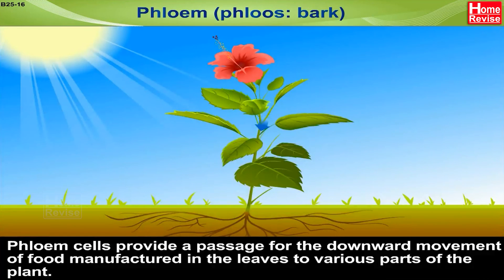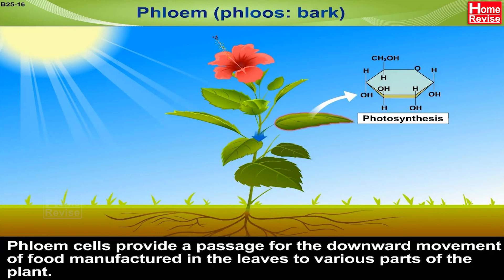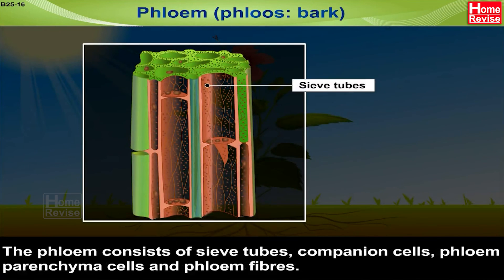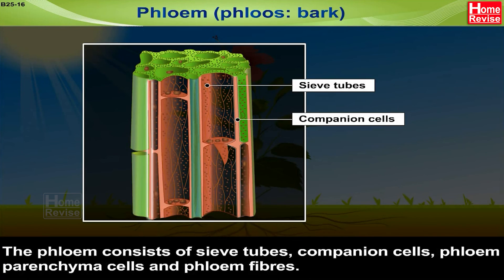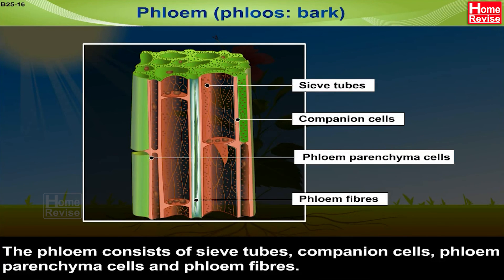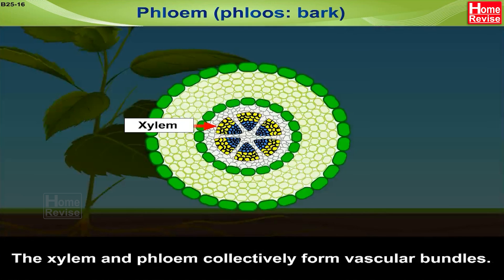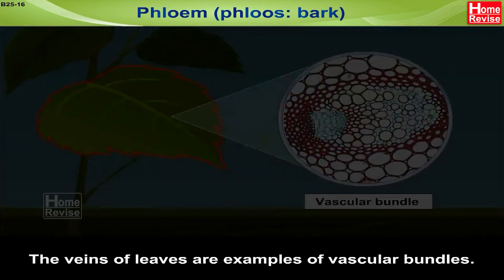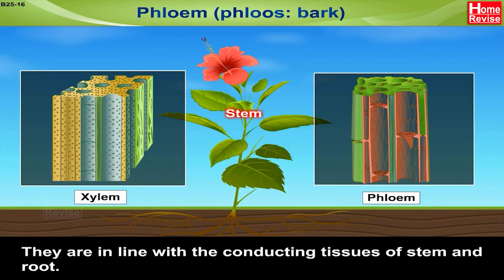The phloem cells provide a passage for the downward movement of food manufactured in the leaves to various parts of the plant. They also provide for the upward movement of prepared food towards the growing new leaves. The phloem consists of sieve tubes, companion cells, phloem parenchyma cells, and phloem fibers. The xylem and phloem collectively form vascular bundles. The veins of leaves are examples of vascular bundles, in line with the conducting tissues of stem and root.